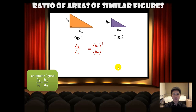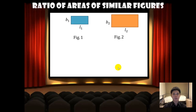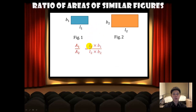Let's look at another example — two similar rectangles. The ratio of the corresponding areas will be equal to l1 times b1 over l2 times b2, because the area of a rectangle is given by length times breadth.